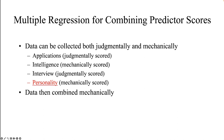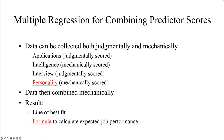Multiple regression is a compensatory method in that high scores on some predictors can offset low scores on others. Two applicants can have the exact same expected performance criterion scores while differing on individual selection tests. The result is a line of best fit that statistically minimizes the distance from each observation to the line. We can then use the resulting formula to insert predictor test scores and compute the expected level of performance for any applicant.